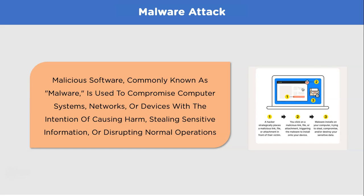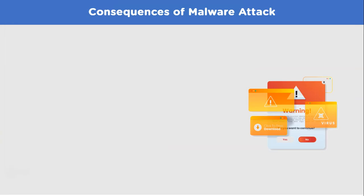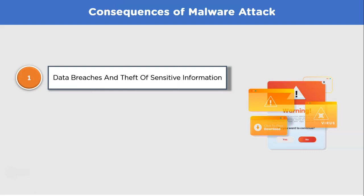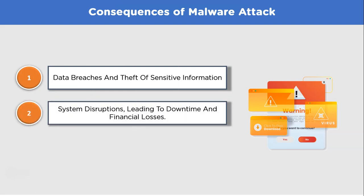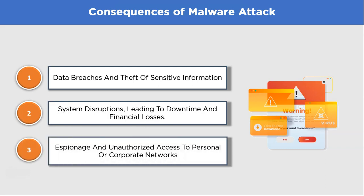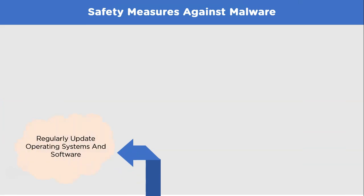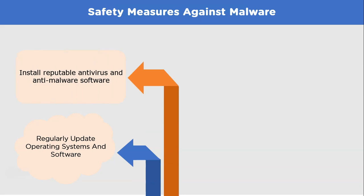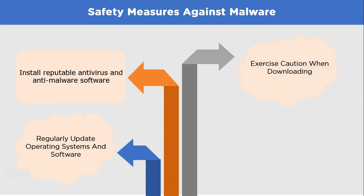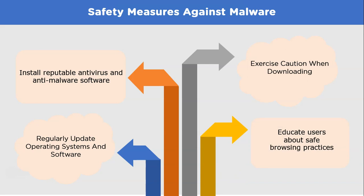A real-world example is the 2017 WannaCry ransomware attack, which infected thousands of computers worldwide, encrypted data, and demanded ransom payments in Bitcoin. Consequences of malware include data breaches and theft of sensitive information, system disruptions leading to downtime and financial losses, and espionage through unauthorized access to personal or corporate networks. To protect yourself: regularly update your operating systems and software, install reputable antivirus and anti-malware software, exercise caution when downloading files or clicking unknown links, and educate users about safe browsing practices.